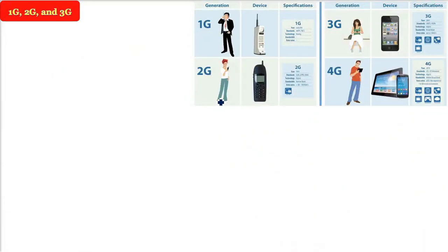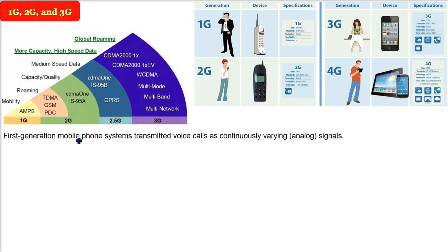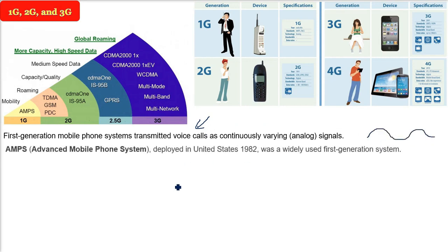There are various generations of mobile telecommunication — 1G, 2G, 3G, 4G, 5G. The first generation (1G) was a mobile phone system transmitting only voice calls using analog signals — no digital, no bits. AMPS (Advanced Mobile Phone System) was deployed in the United States in 1982 and was the widely used 1G system.